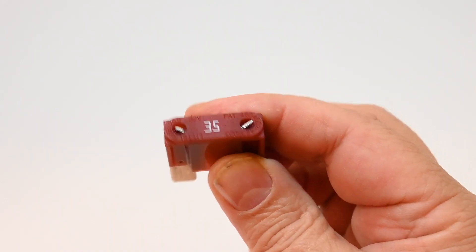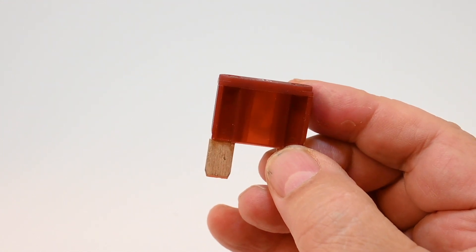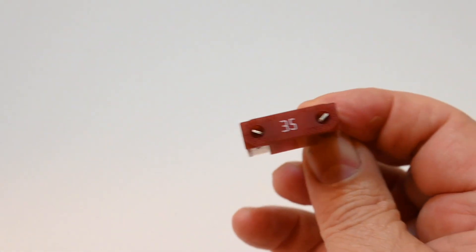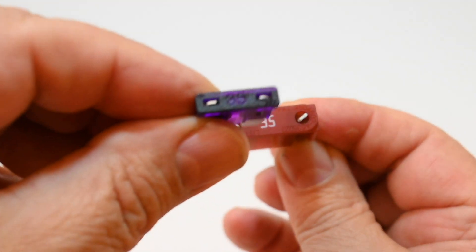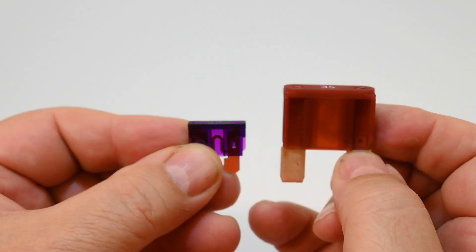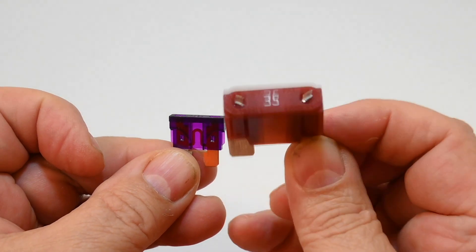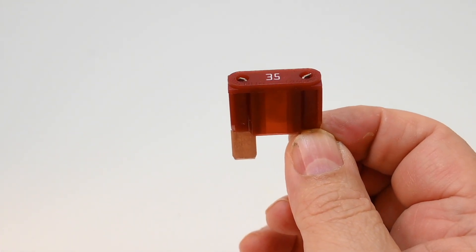Some devices in an RV use these maxi fuses. This one actually comes from the Lippert Ground Control 3.0 control board and it's rated for 35 amps, which is kind of an oddball size. You can buy a 35 amp ATC-ATO fuse, so why would you ever want to use such a big fuse if a small one would work? Well, the fact is, this is a special purpose fuse and it does have a characteristic called slow blow.